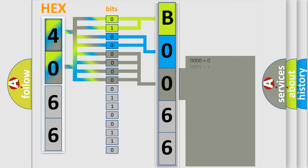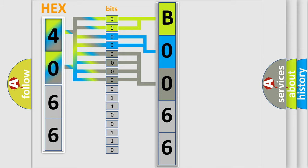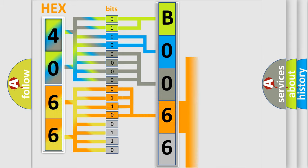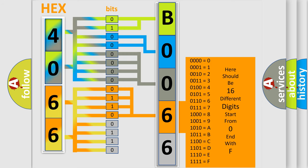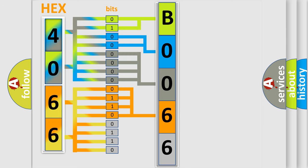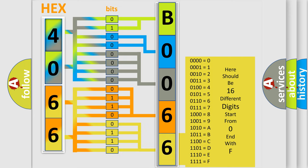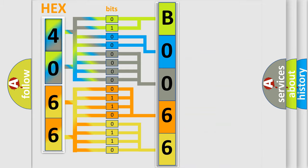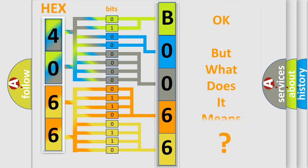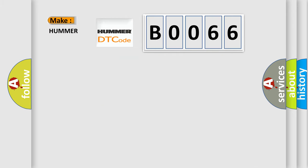The second byte is composed of a combination of eight bits. The first four bits determine the fourth character of the code, and the combination of the last four bits defines the fifth character. A single byte conceals 256 possible combinations. We now know how the diagnostic tool translates the received information into a more comprehensible format. So, what does the Diagnostic Trouble Code B0066 interpret specifically?